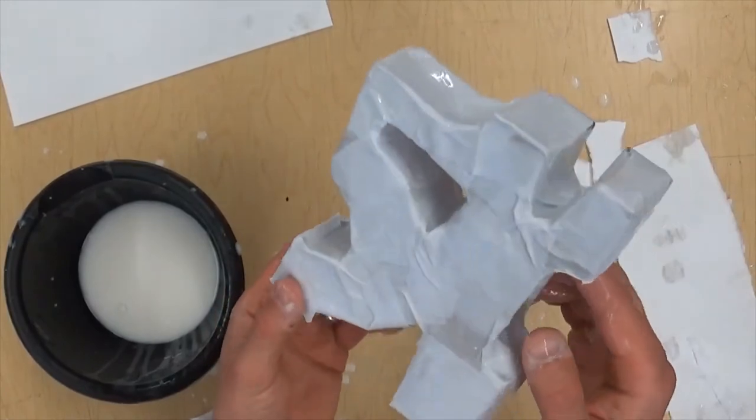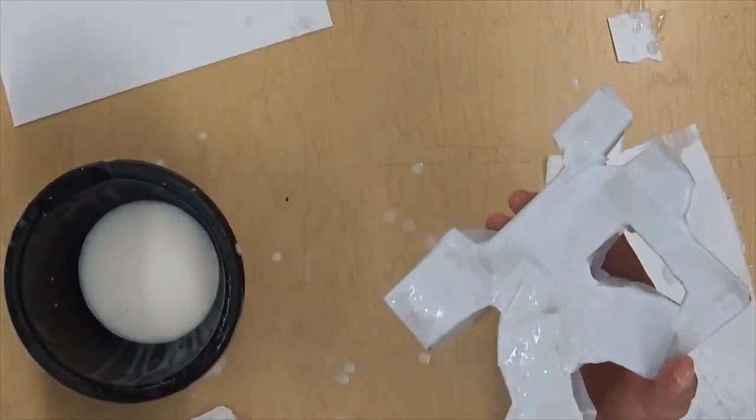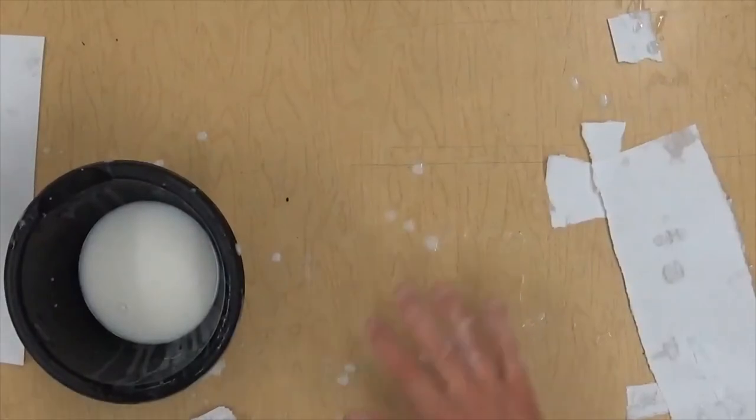Once your sculpture is all closed up all the way around, and you can see the form really well, you can just put it on another piece of paper to dry flat. Make sure it's feet side down so it's standing up the way you want it. And then we'll just clean up our mess.